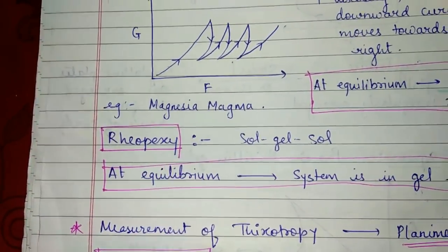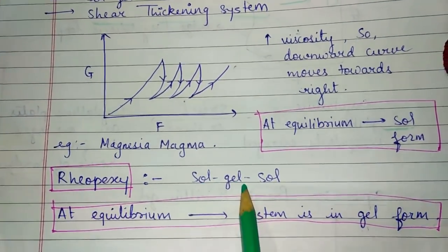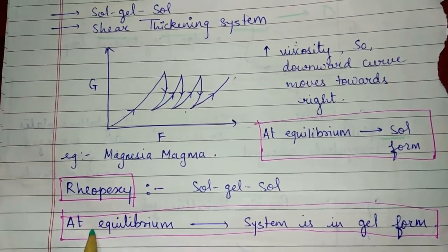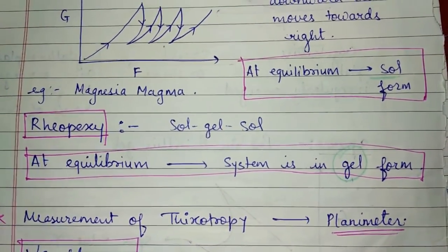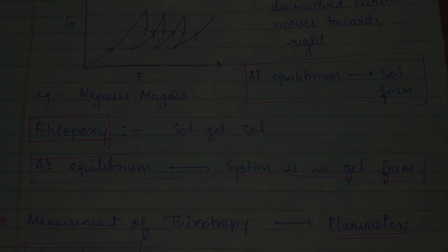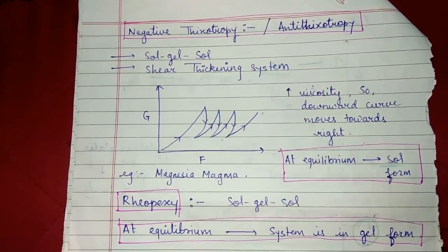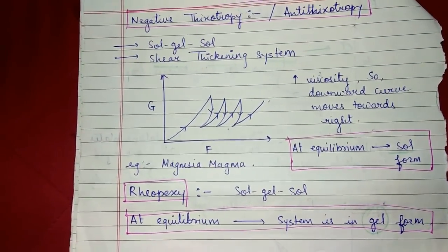Rheopexy is another topic. In rheopexy, sol-gel-sol is formed, but at equilibrium, the system will be in gel form. Measurement of thixotropy is calculated by planimeter. This is all about rheology. In the next part, we will see about viscosity.